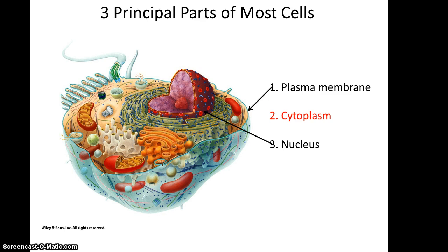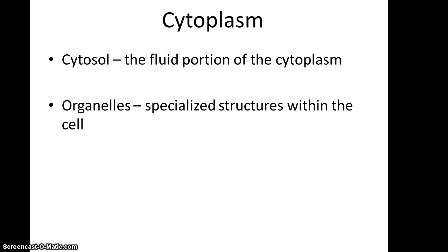The second major portion of the cell is the cytoplasm — everything between the plasma membrane and the nucleus. Within the cytoplasm, you have the fluid portion referred to as the cytosol. While aqueous-based, it's not really as liquidy as we like to think of fluids — it's actually more like the consistency of toothpaste. Within the cytosol are many structures, including organelles, which are specialized structures that perform specialized functions.